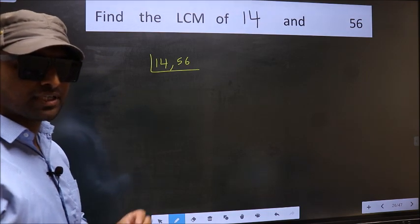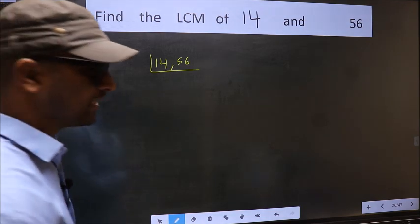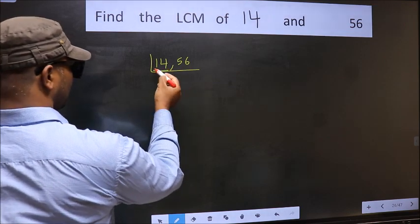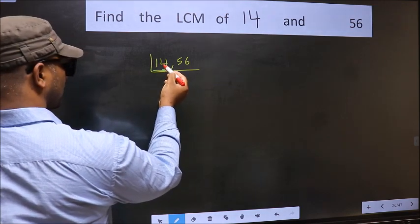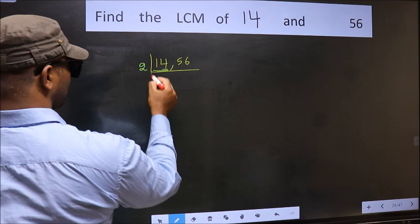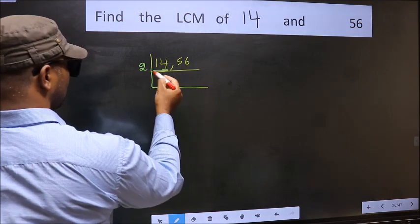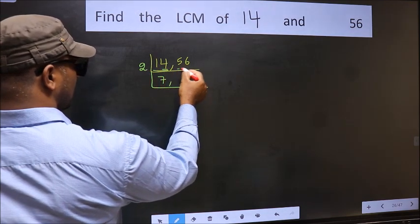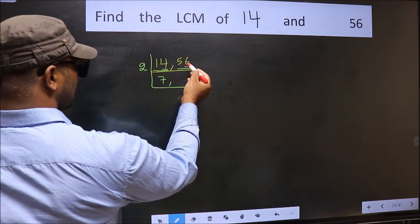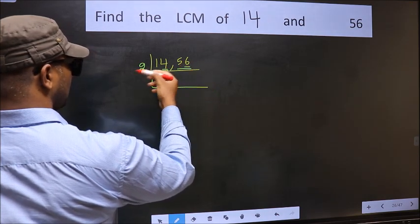Now you should focus on the first number, which is 14 here. For this number, last digit 4 is even, so take 2. When do we get 14 in 2 table? 2 times 7 is 14. The other number 56, last digit 6 is even, so this is divisible by 2.